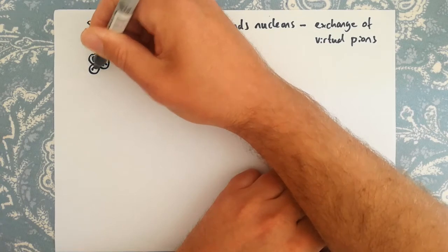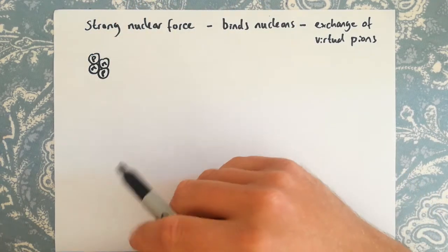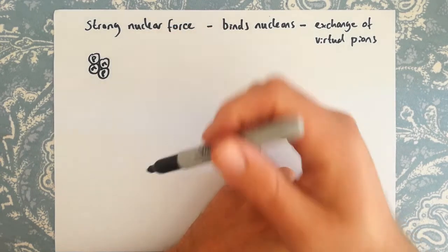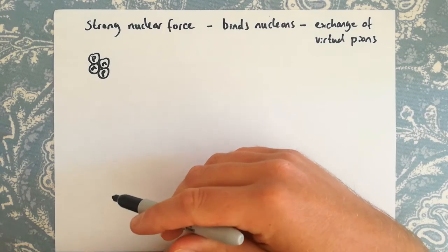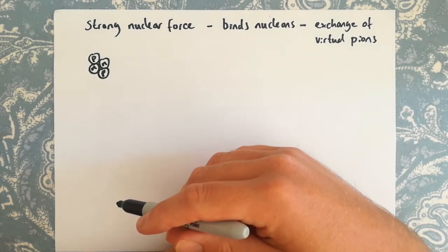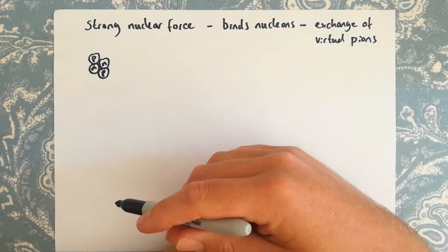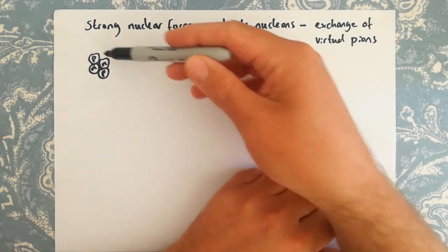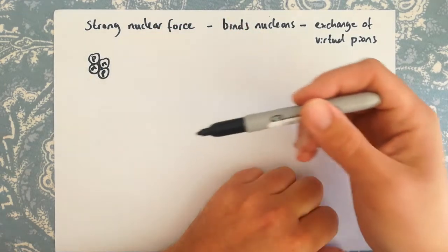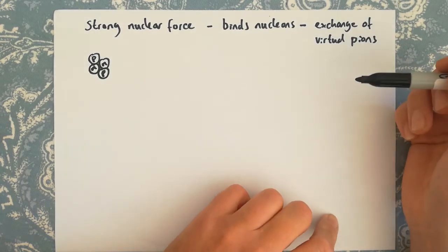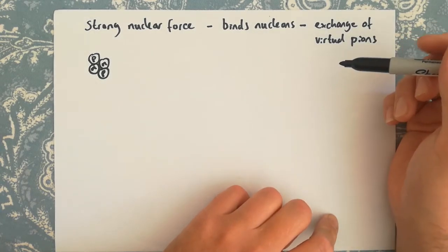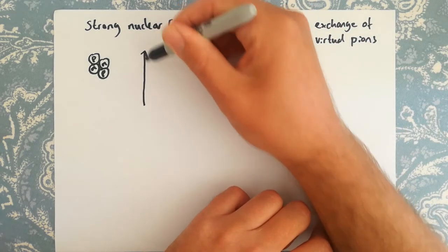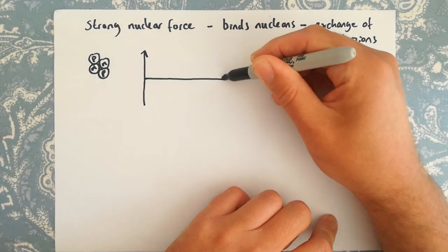As a brief recap: inside a nucleus we have protons and neutrons, which we collectively refer to as nucleons. The protons are going to be repelling due to the electromagnetic force between them, and the reason the nucleus holds together is there is this strong force that acts equally between all of those particles — protons attract protons, neutrons attract neutrons, and protons and neutrons attract.